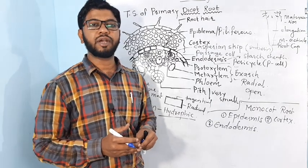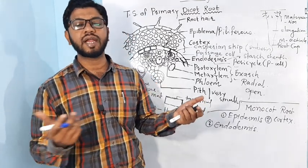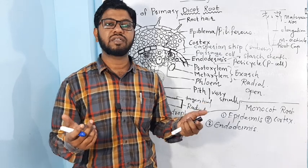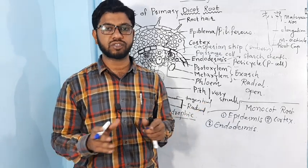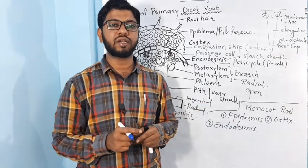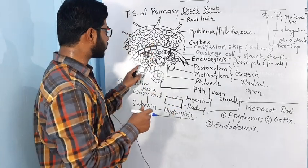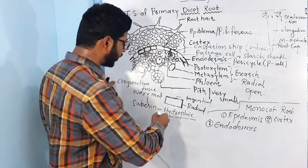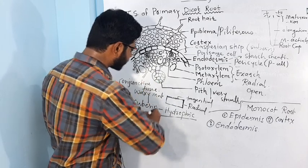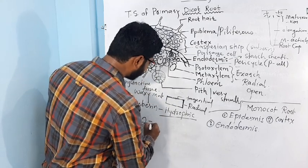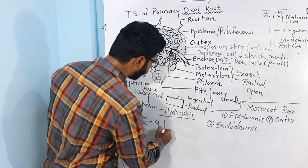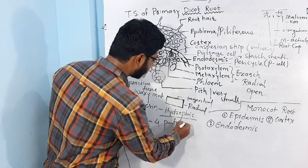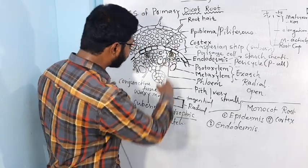The main difference between monocot root and dicot root is the number of vascular bundles. In dicot root, the vascular bundles are found in 2 to 6 patches.